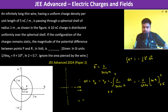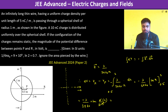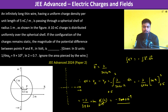So this becomes −λ/(2π ε₀) · [ln 2 − ln 0.5], which is ln(2/0.5) = ln 4. Now substituting: λ is 5 × 10⁻⁹ C/m, and 1/(2π ε₀) = 2 × 9 × 10⁹, multiplied by ln 4.